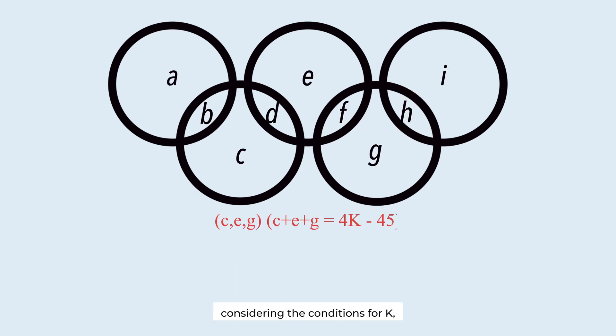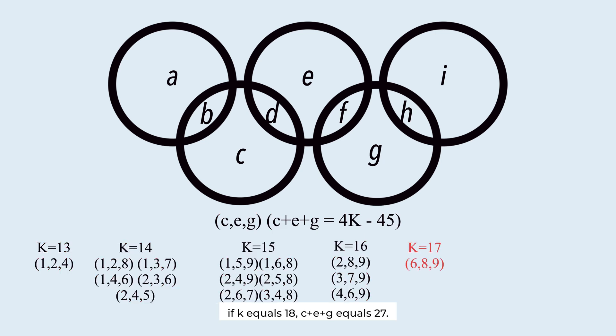Considering the conditions for K, these are possible combinations for C, E, and G. If K equals 18, C plus E plus G equals 27. However, the maximum of C plus E plus G is 24, which is 7 plus 8 plus 9. So this case is not the answer.